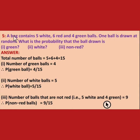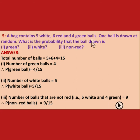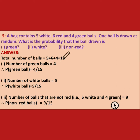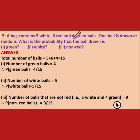Now fifth: a bag contains 5 white, 6 red, and 4 green balls. One ball is drawn at random. What is the probability that the ball is green, white, or non-red? Total number of balls: 5 plus 6 plus 4 equals 15. Number of green balls is 4, so probability of getting a green ball is 4 upon 15.